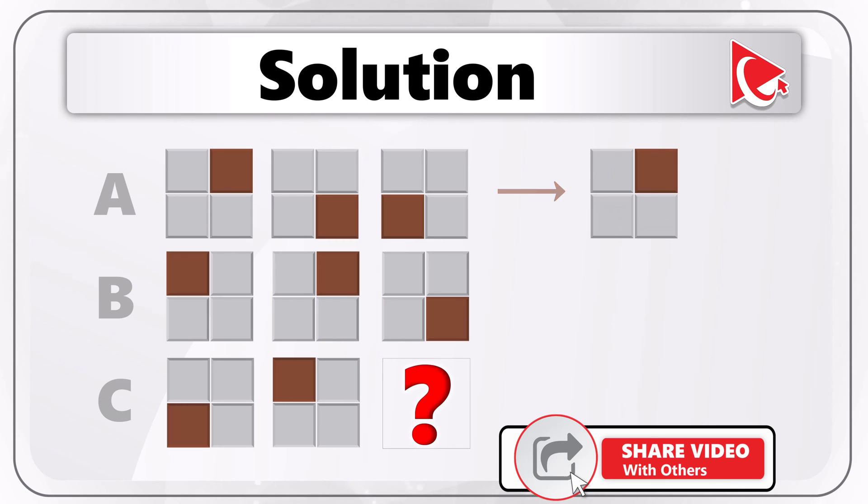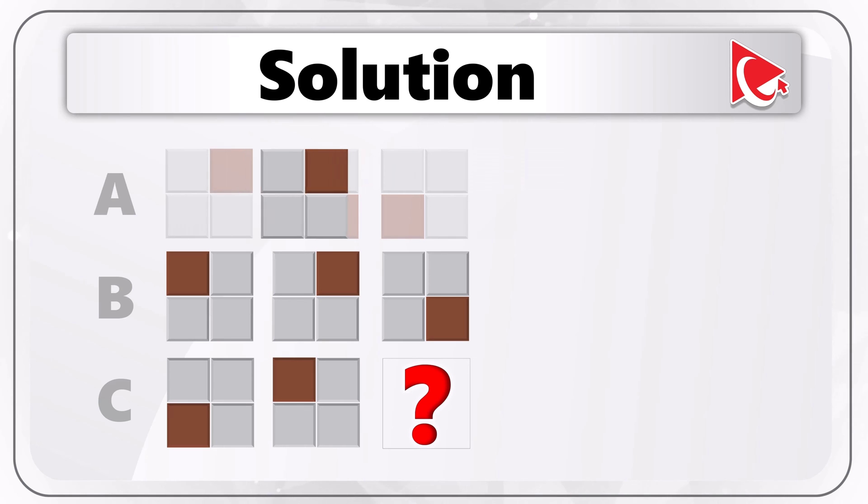For example, in the leftmost column, the darker square is in the upper right. Then it shifts to the lower right. Then it shifts to the lower left.